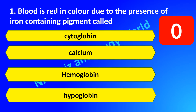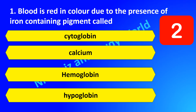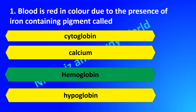Blood is red in color due to the presence of an iron-containing pigment called dash. Is it cytoglobin, calcium, hemoglobin, or hypoglobin? The answer is hemoglobin.